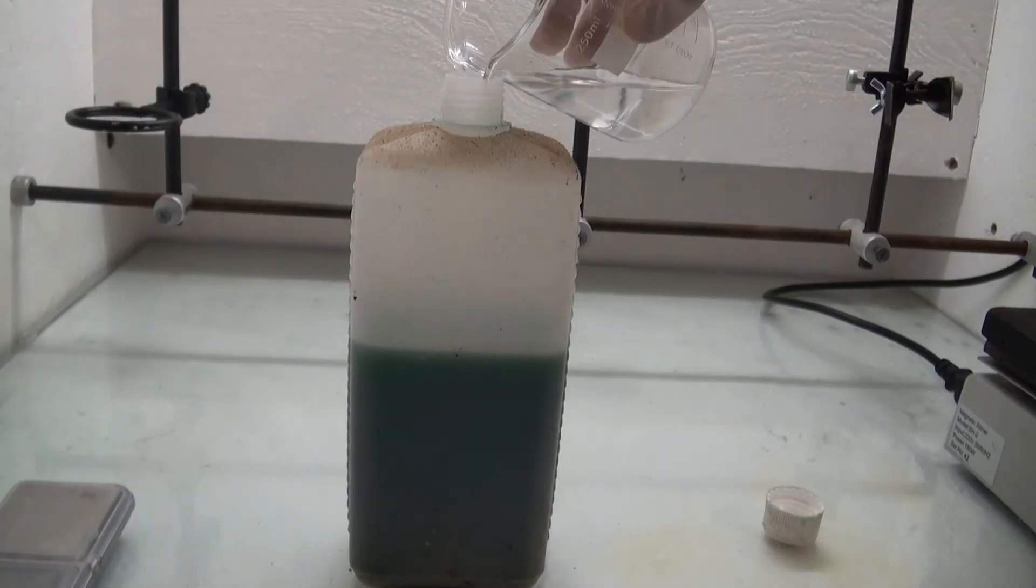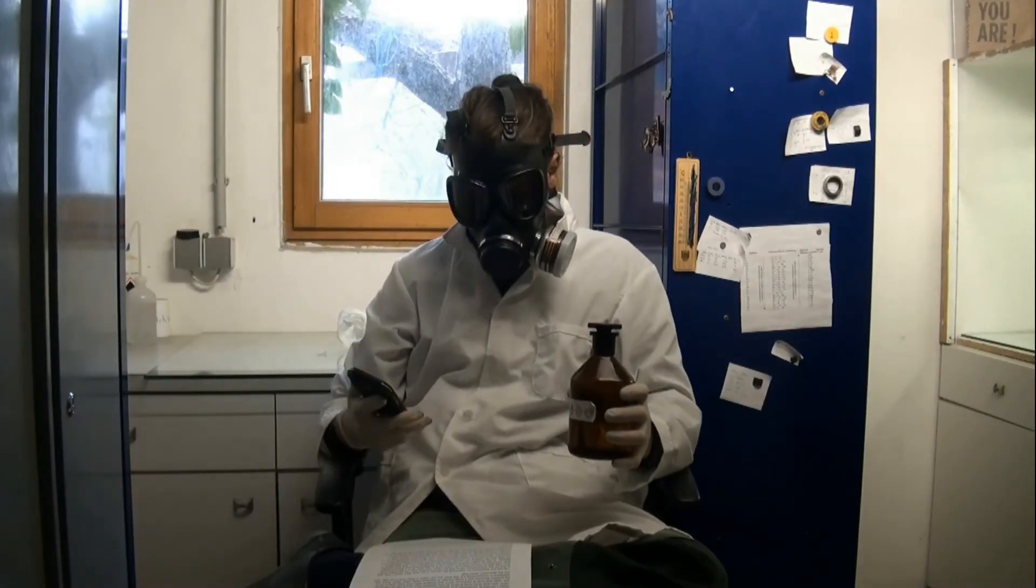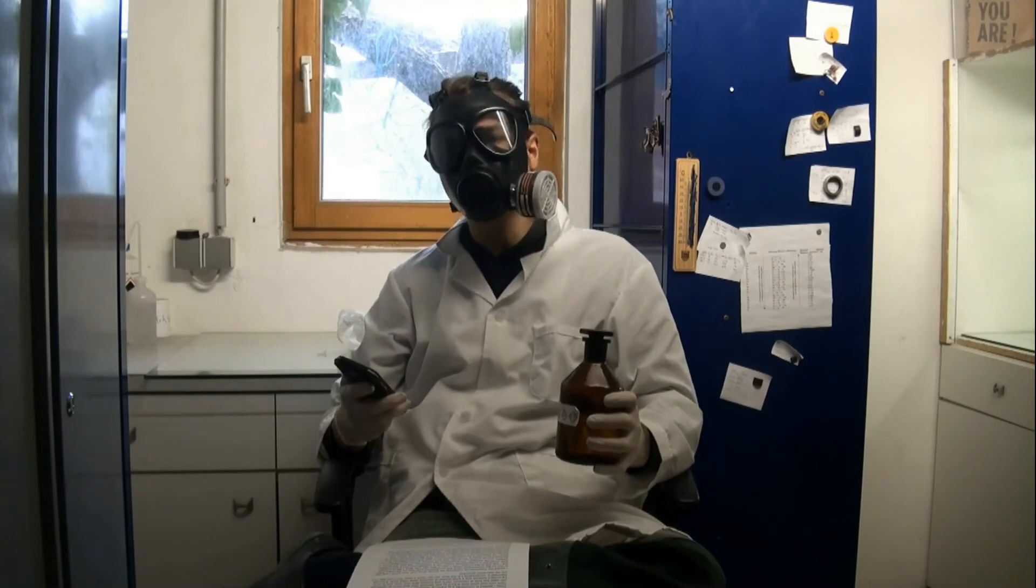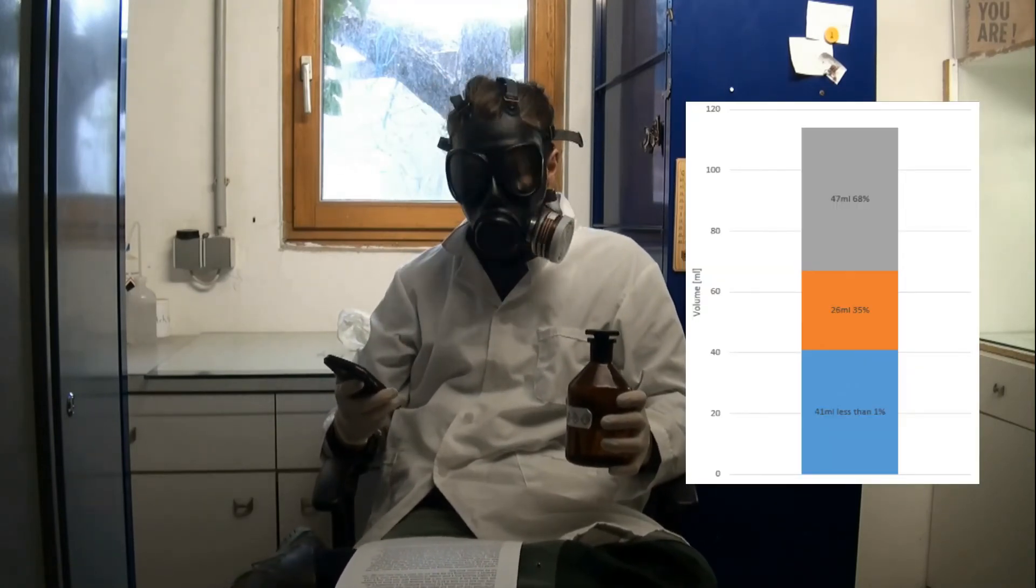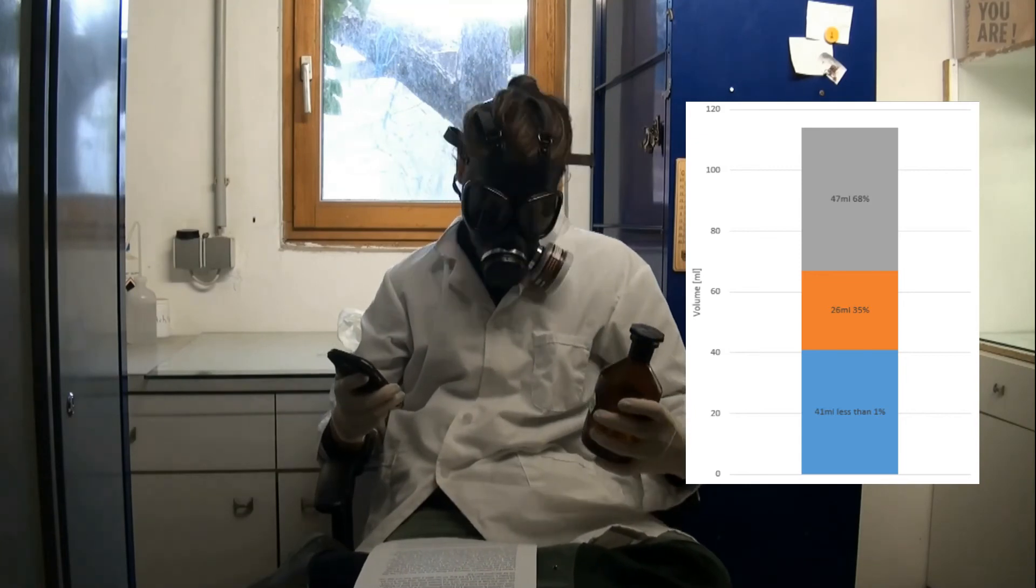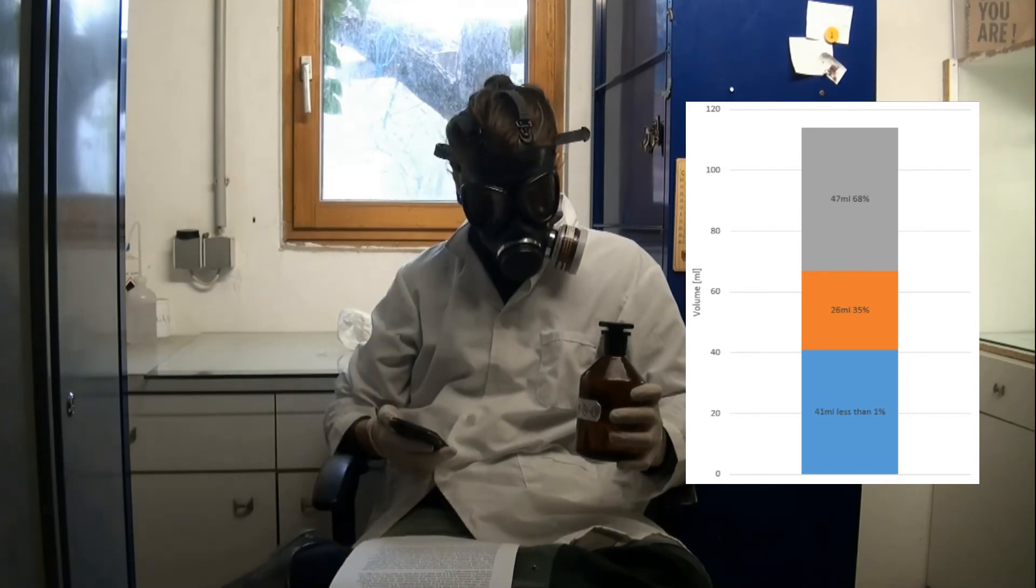This was added into my waste nitric acid container. Now as a summary I was able to turn 150 milliliters of 44% nitric acid into 47 milliliters of 68% nitric acid and 26 milliliters of 35% nitric acid.